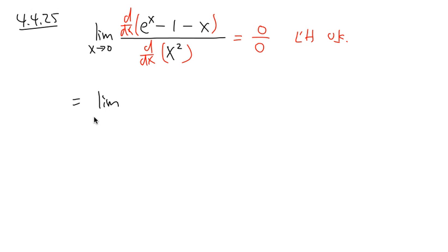This is the same as the limit when x is approaching 0. Alright, take the derivative of e to the x, it's just e to the x. Derivative of negative 1 is 0. Derivative of negative x is minus 1. Alright, and then on the bottom, take the derivative of x squared, that will give you 2x.